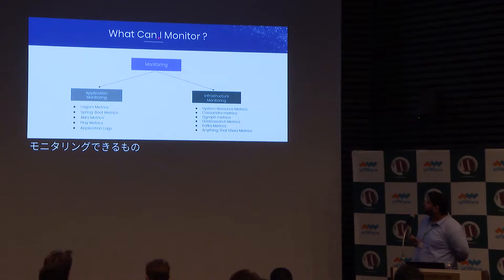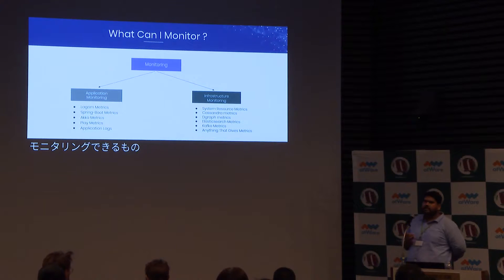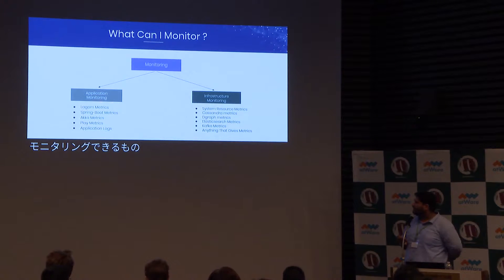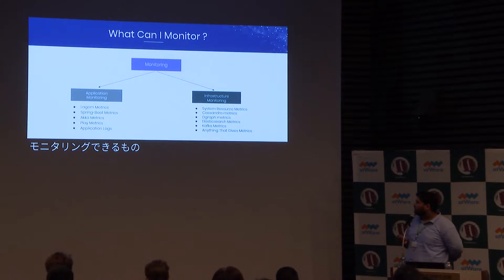Let's look at what can be monitored using Premonar. Monitoring is classified into two categories. Application monitoring covers how my application — whether Lagom, Spring Boot, Akka, or Play — is behaving: the state of how many actors the application is using, heap performance, and all insights. For certain components where we can't directly fetch metrics, we generate logs conveying information, then using the transformer, convert that log-based text data into metric data.